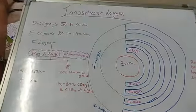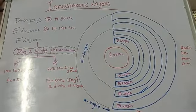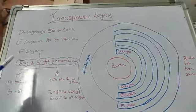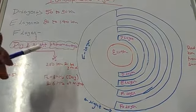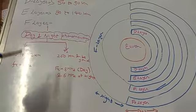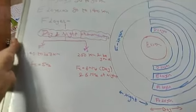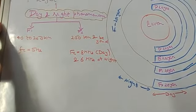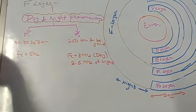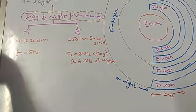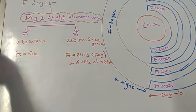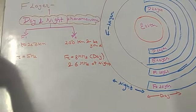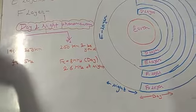The D layer is 50 to 90 kilometers wide. The E layer is 90 to 140 kilometers wide. The F layer, which due to day and night phenomenon can be subdivided into F1 and F2, has the F1 at 140 to 250 kilometers and the F2 at 250 kilometers and beyond. The frequency is about 5 hertz in F1, and in F2 it is about 8 megahertz during day and 6 megahertz at night.